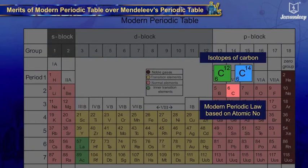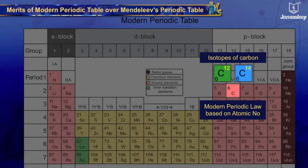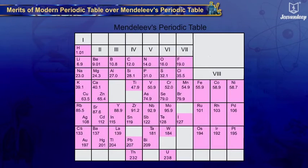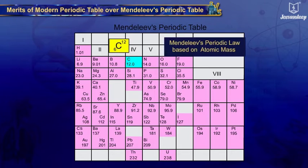Isotopes occupy the same position in the Modern Periodic Table, justified by the Modern Periodic Law, as they have the same atomic number but different atomic mass. This fact could not be justified by Mendeleev's Periodic Law. For example, the position of carbon-12 and carbon-14.